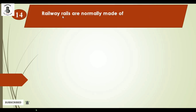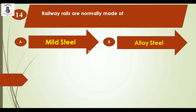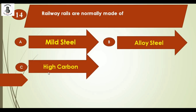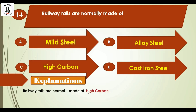Railway rails are normally made of: option A mild steel, option B alloy steel, option C high carbon steel, and option D cast iron. Railways are normally made of high carbon steel. The right answer is option C.